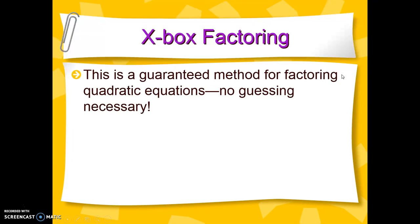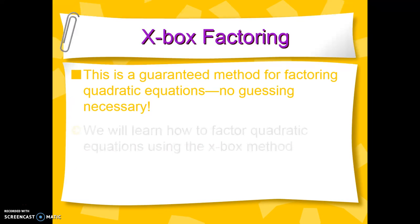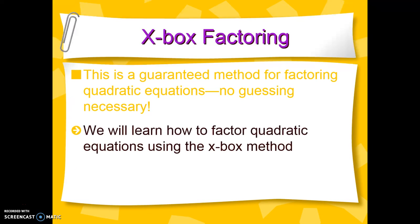This is a guaranteed way for us to be able to factor a quadratic equation. There's no guesswork necessary, so it's going to be really useful for us to be able to factor using the Xbox method if we're stuck on something — especially if there's a number that's not just 1 for your A value, where those are going to be trickier to factor using the two-parenthesis method.